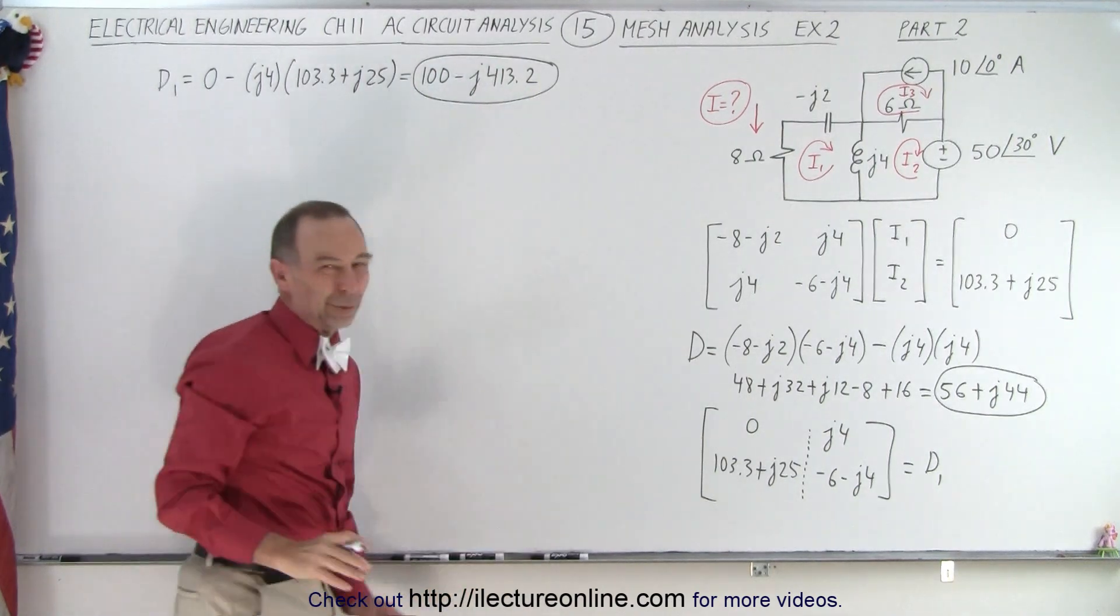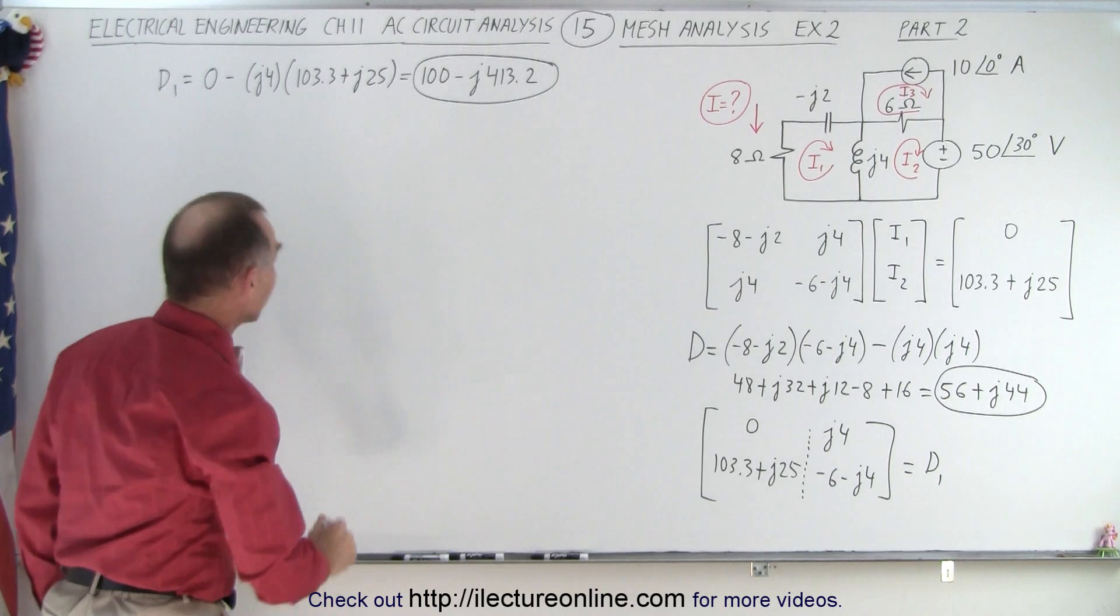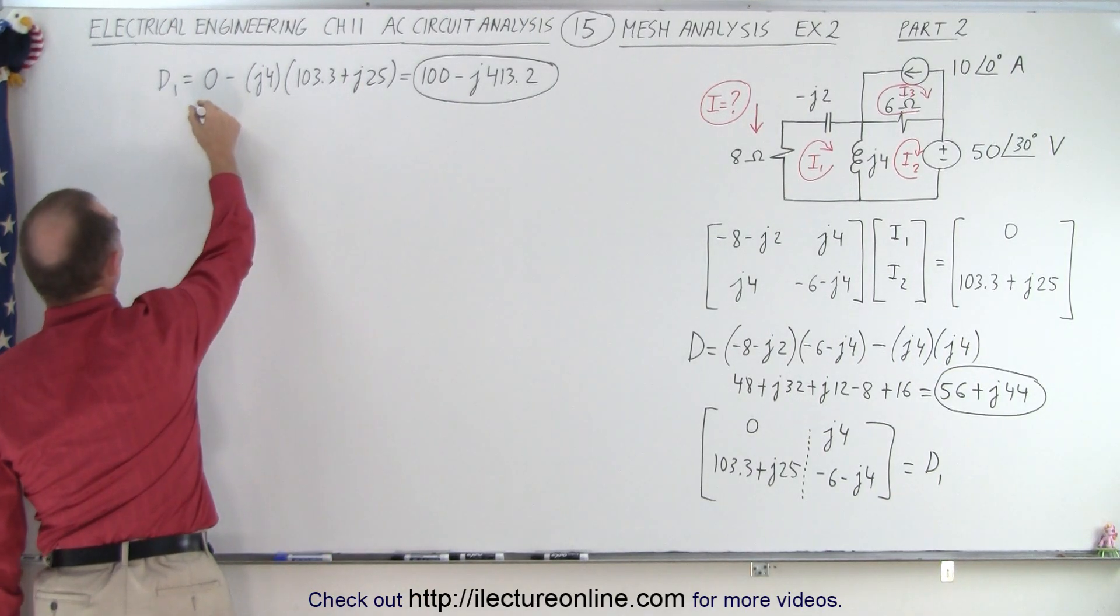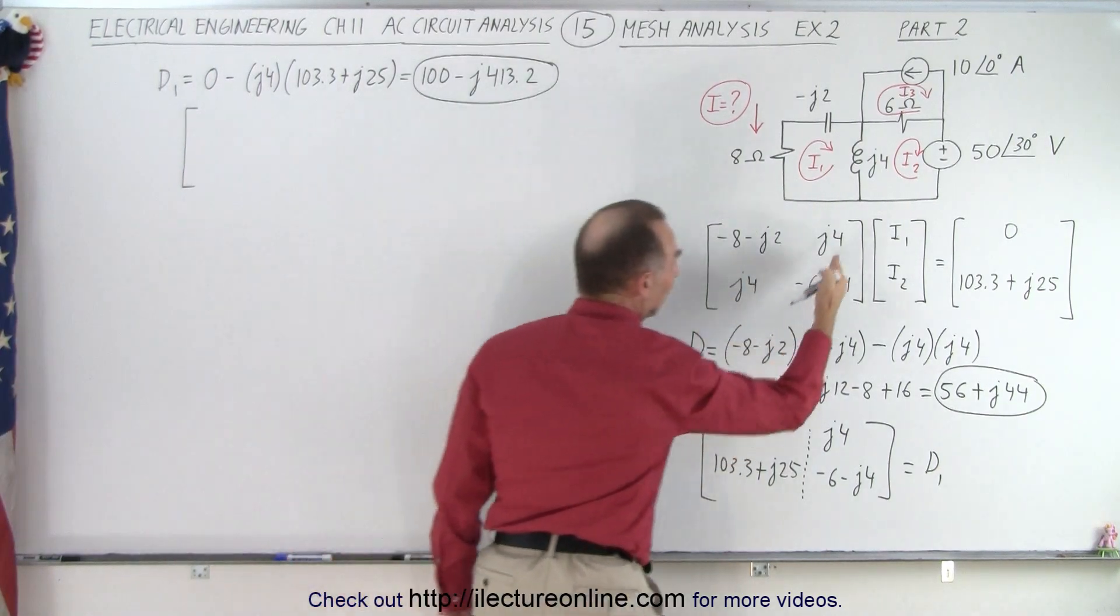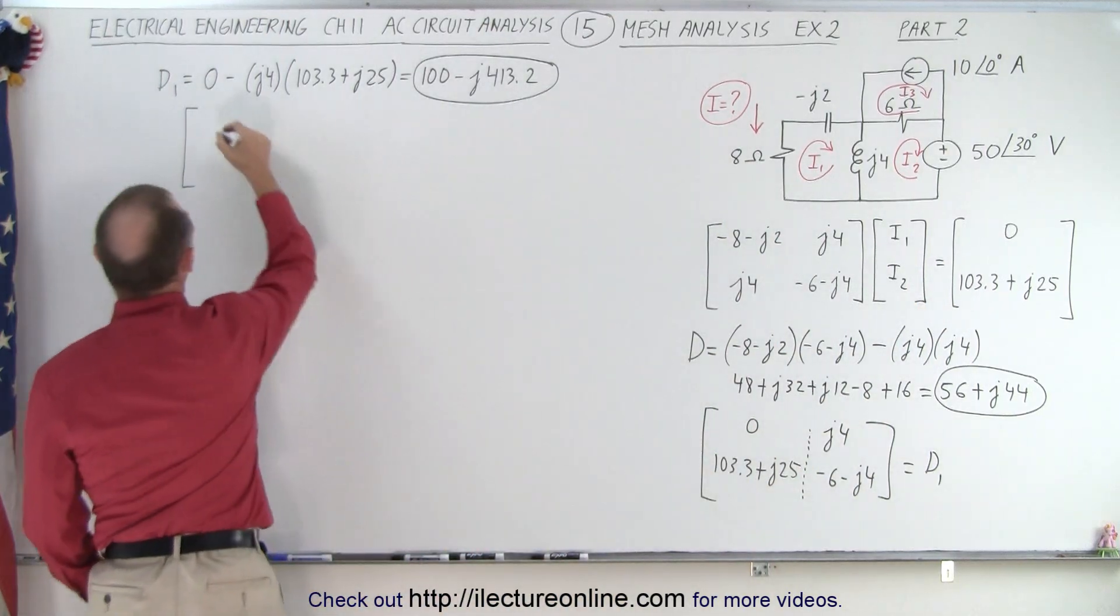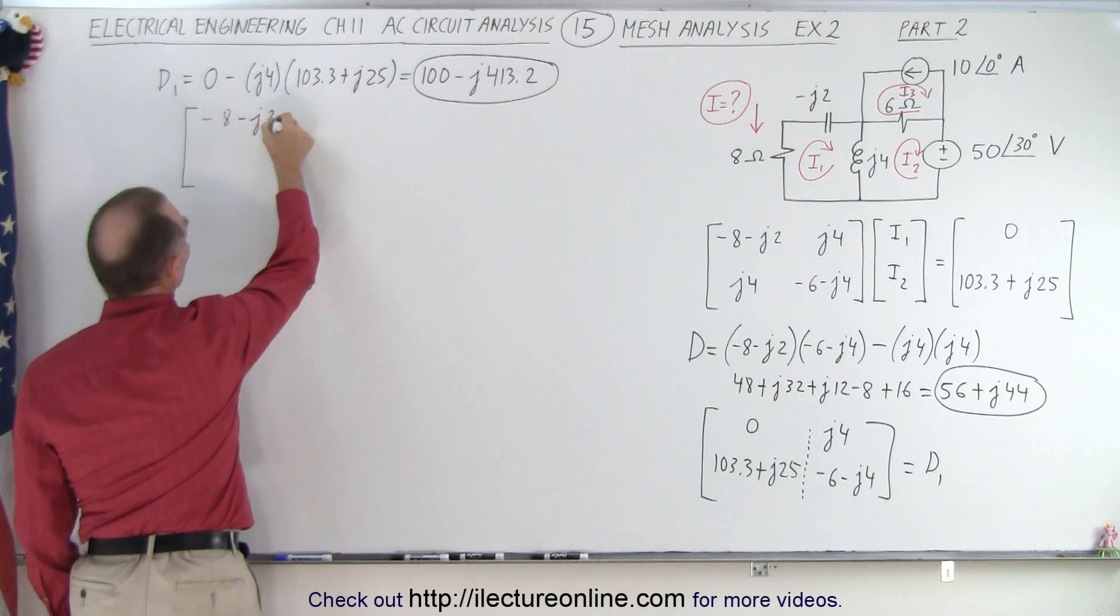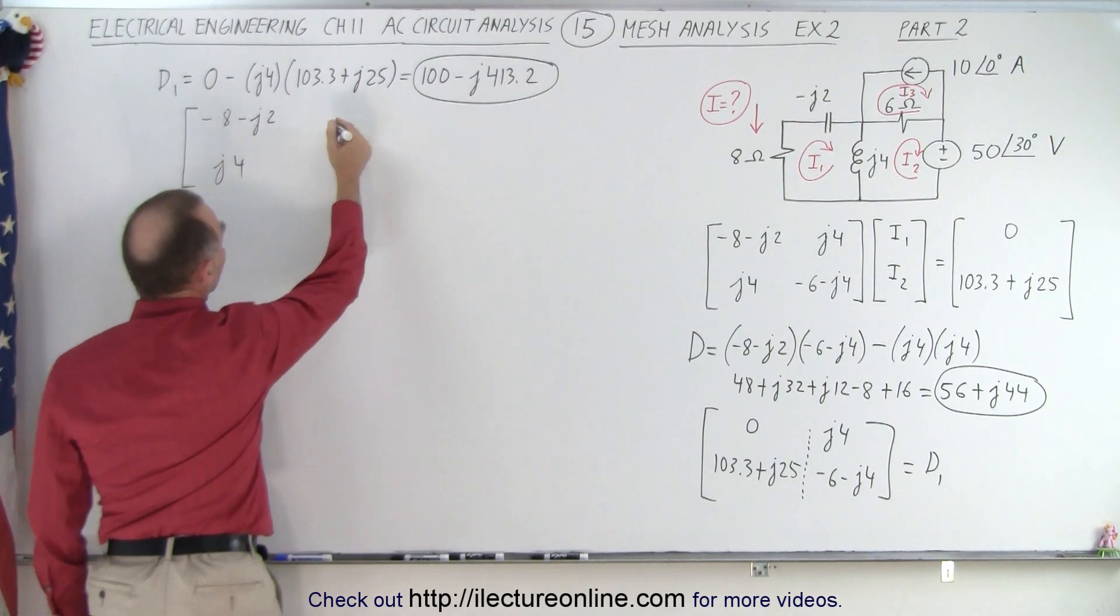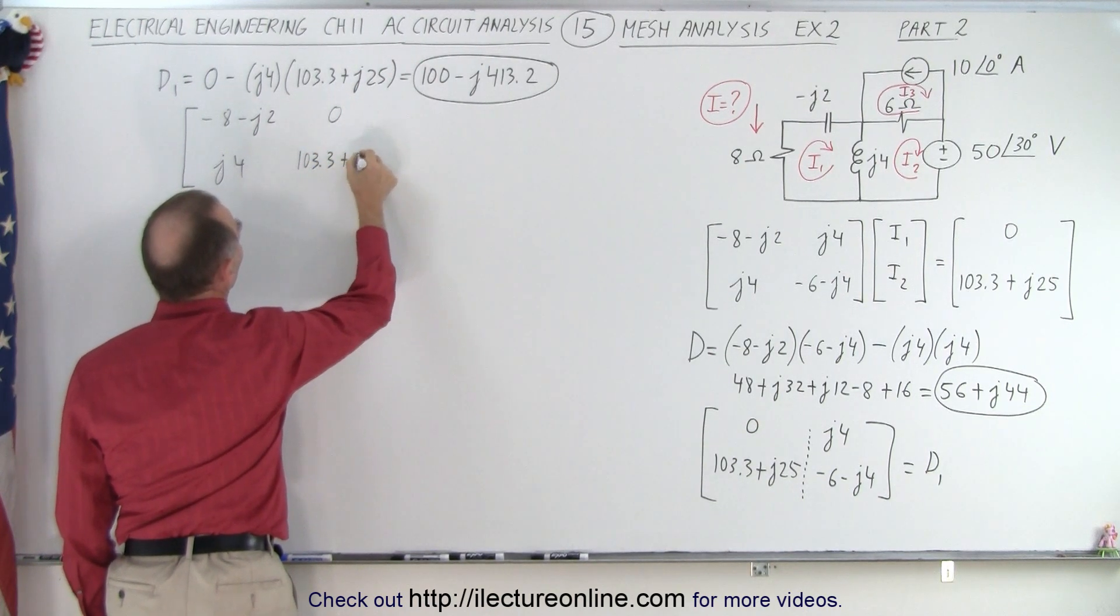Now, of course, since we're looking for I, we don't have to get the value for I2, but might as well do it while we're here. So now let's find, because after all, we're trying to learn how to do this, just in case. So what we're going to do now is we're going to take the determinant and replace this column by these values right here. So we end up with a minus 8, minus J2, and a J4. And on the right side, we end up with a 0 and 103.3 plus J25.